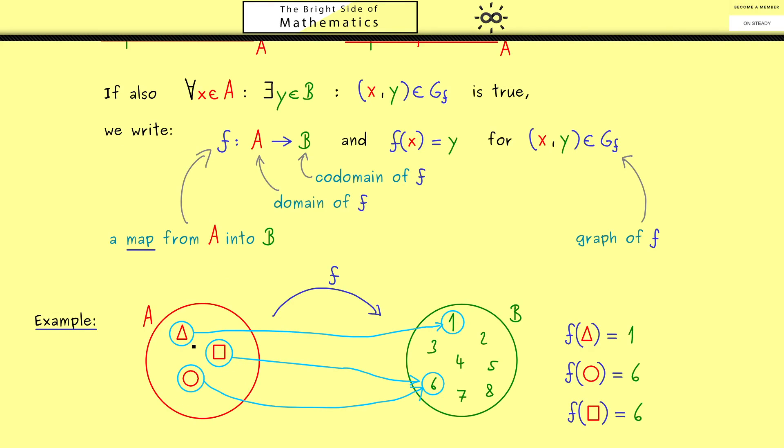Hence, please keep that in mind: the restrictions we have for a map only hold on the left-hand side. For an element in A, there is only one arrow allowed that starts there. In fact, we already know we need exactly one arrow that starts there. However, then on the right-hand side, everything can happen. We can leave elements out of the game, and we can hit some elements more than one time.